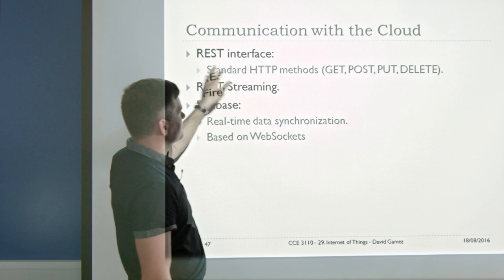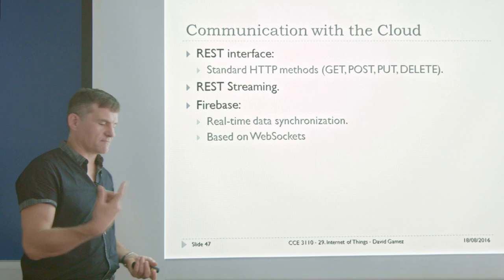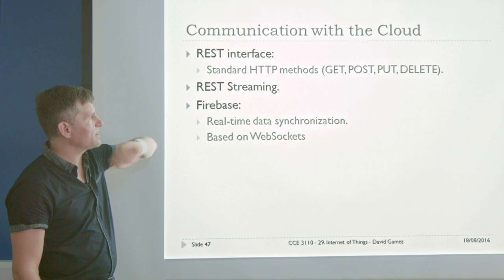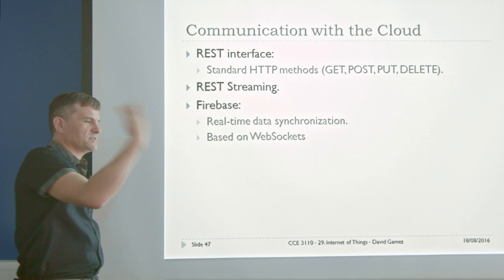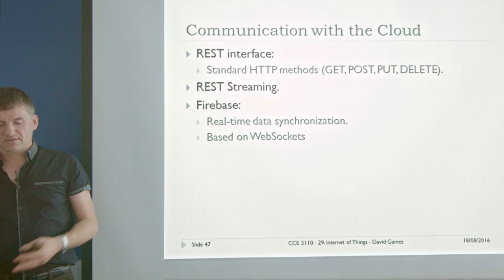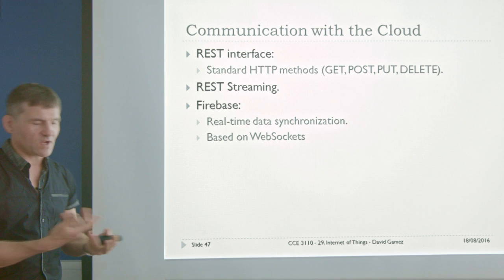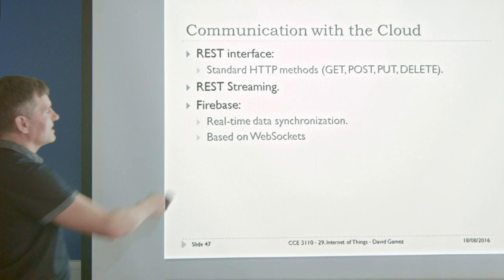To talk to the cloud, you've got different ways. There are standard HTTP methods — get, post, put, delete — but you'd have to run those HTTP requests every second, creating a big overhead. Then there's REST streaming, which streams all the settings between the hub and the cloud. And then there's Firebase, which is their mainstream method — real-time data synchronisation based on web sockets. It's still using the same ports as HTTP but gives nice, easy two-way communication where the server can push stuff to the client, without the router getting in the way.